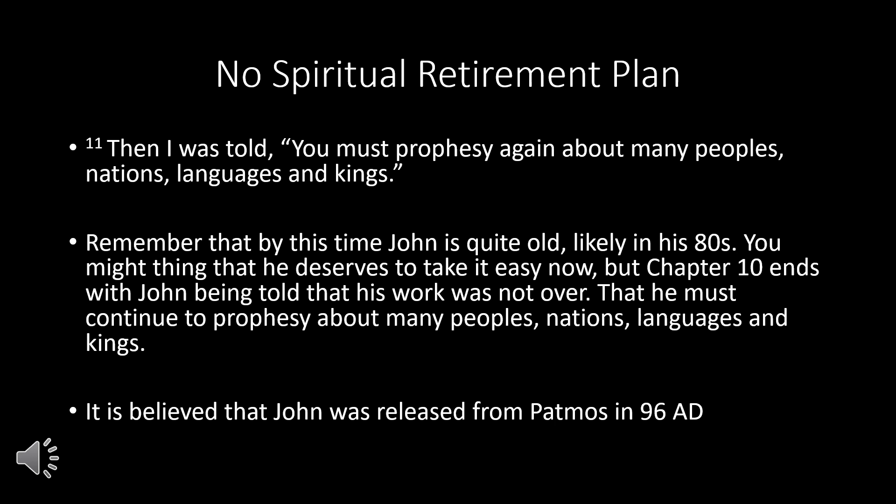This is not in the Bible, but it has been passed down through Christian tradition. It is a historical fact that in 96 AD, the Roman emperor Domitian was killed in a coup, and the emperor Nerva who took over freed all political prisoners. It is believed that John was released from Patmos at that time and that he did continue to prophesy about peoples, nations, languages, and kings for several more years before his death. We don't have hard evidence about that, but it has been passed down through Christian tradition.